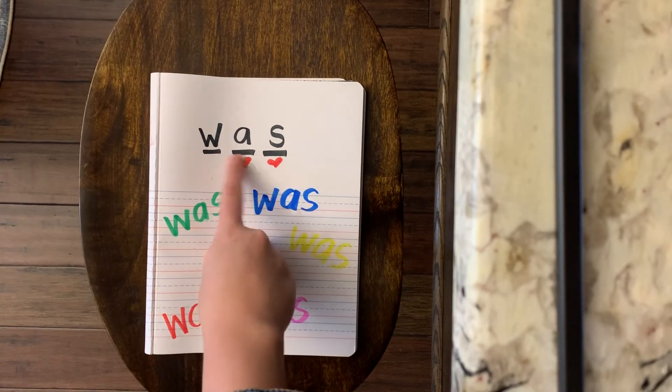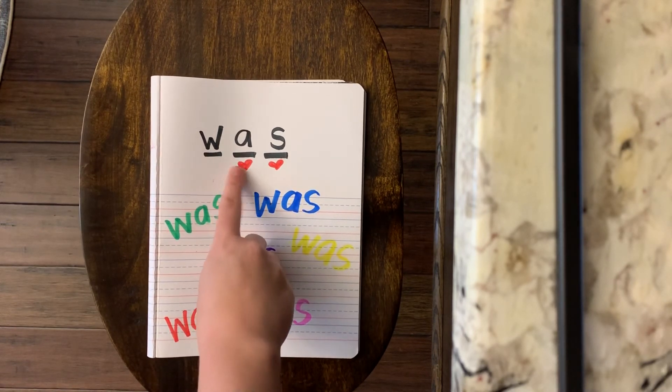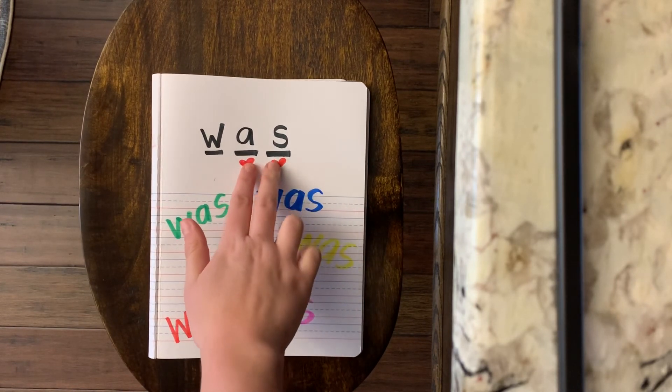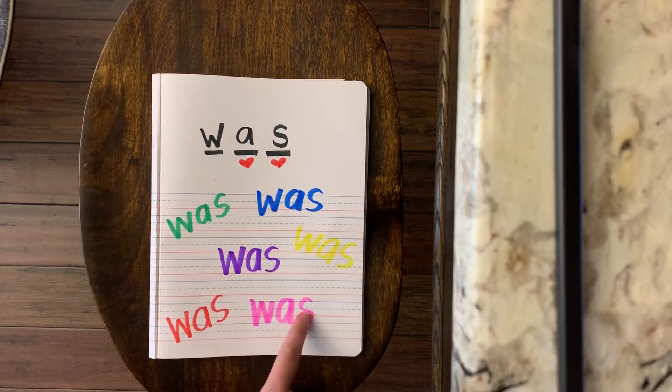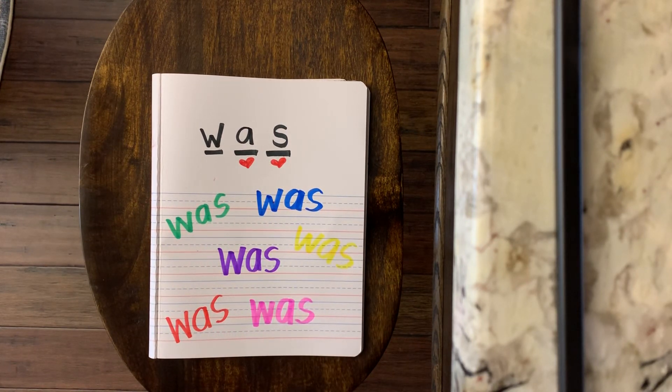So I want you to practice writing the word 'was', and then let's put the hearts under the heart part. And then let's just practice writing it. Do it in rainbow write. Make it fun and colorful. And it will definitely help you remember. Have fun, guys.